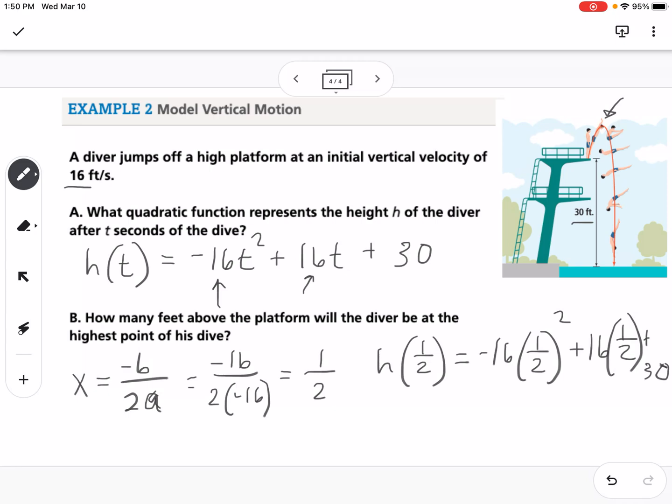So then if I plug that into the calculator, I get that the height is 34, which it says how many feet above the platform. So if the platform's at 30 feet, that tells us we can say 4 feet above the platform.